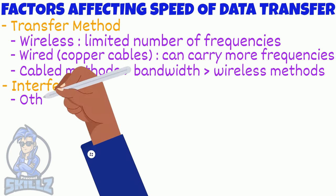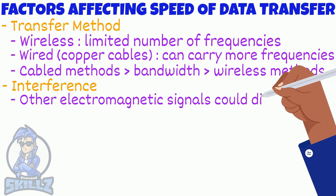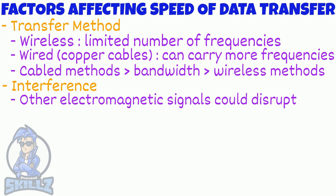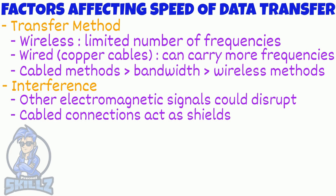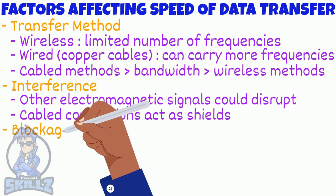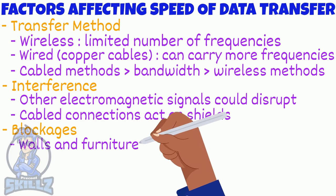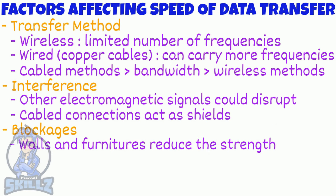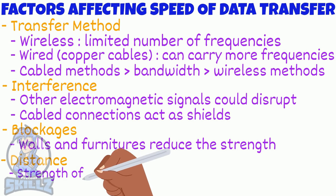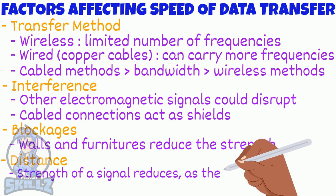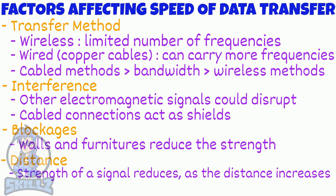Interference: other electromagnetic signals can disrupt wired and wireless signals. Cable connections can sometimes shield from interference by having wires wrapped in a thin layer of metal. Blockages like walls and furniture reduce the strength of wireless signals, reducing available bandwidth. Distance: the strength of a wired or wireless signal is reduced as the distance it travels increases.